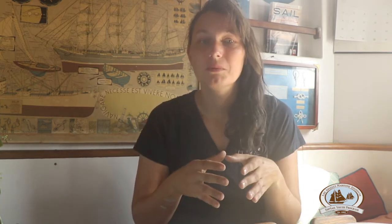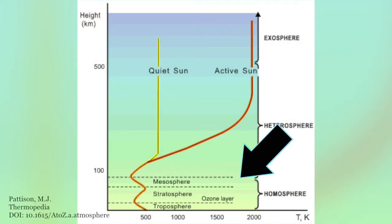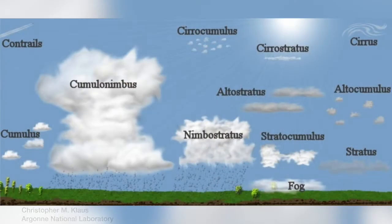Clouds form at the condensation level, which is the point where air no longer rises and begins to cool and shrink. We see clouds in Earth's homosphere, which includes the troposphere, stratosphere, and mesosphere. Cloud formation is affected by an assortment of factors, including geographic location, air temperature, particles in the air, and humidity. So it's possible to see a wide variation of the kinds of clouds in the different parts of the atmosphere.